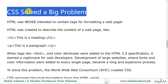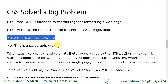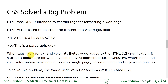CSS solved a big problem. HTML was never intended to contain tags for formatting a web page — it was created to describe the content of web pages. When tags like font and color attributes were added to the HTML 3.2 specification, it started a nightmare for web developers.